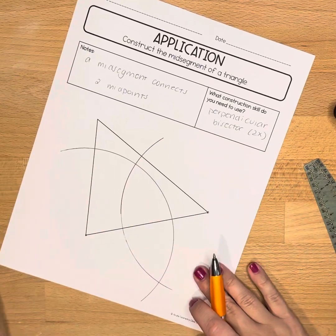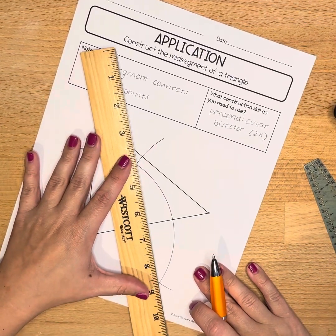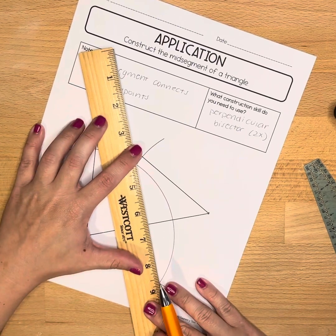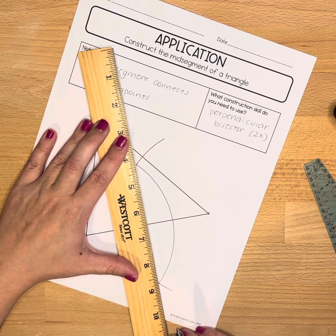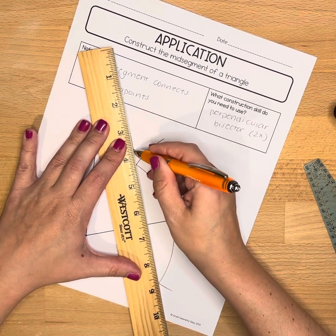Then I'm going to take my straight edge and I'm going to connect those two intersections. We want to make sure we take the time to line that up nicely.